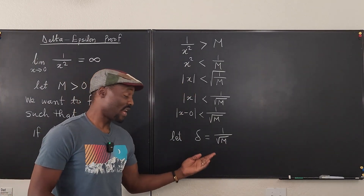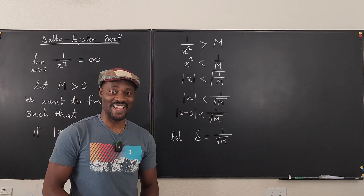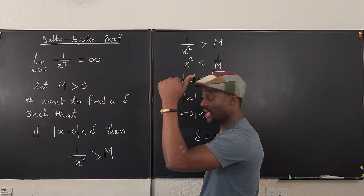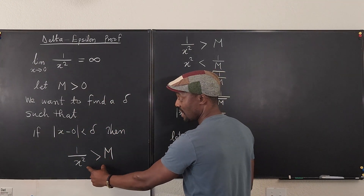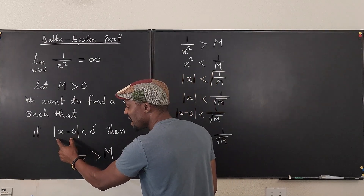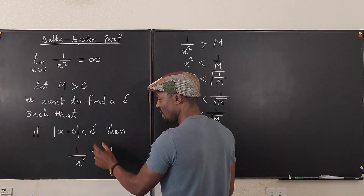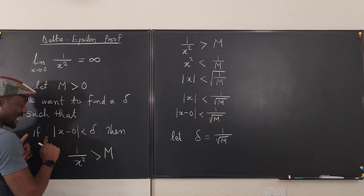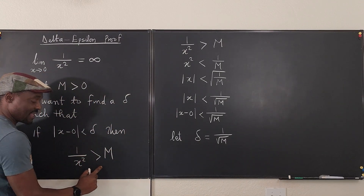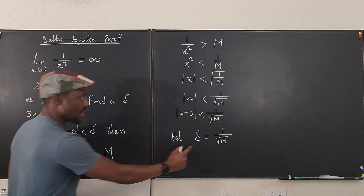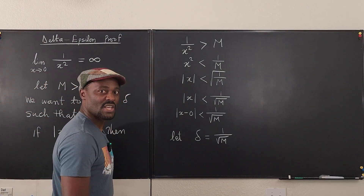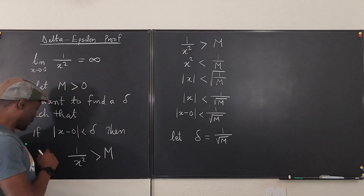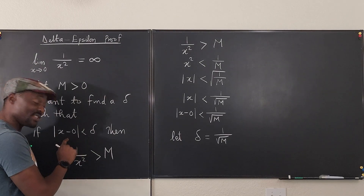This is all I need to show. Once you have this, go back to the claim from the beginning. What was the claim? That if we can find a delta, we want to find a delta such that if this delta exists, then this is always true. We have claimed that the delta exists — but is it true? If this delta exists, is this true?